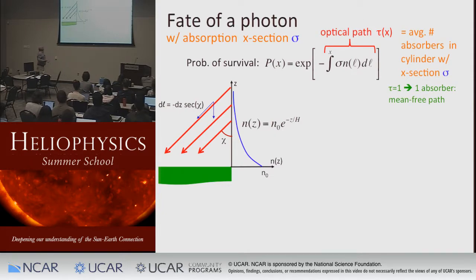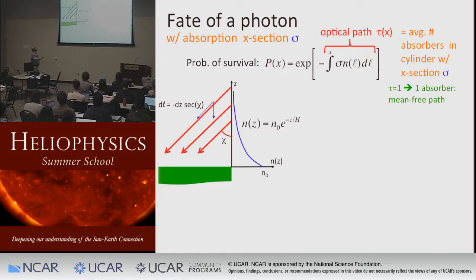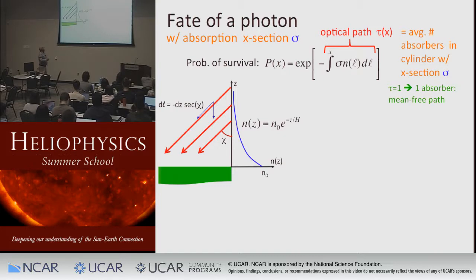I want to think about an individual photon. It has some wavelength, it's coming in — maybe not from straight overhead because it's not noon on the equator — so it's coming in at some angle, written as the Greek letter chi. It comes in at this angle and may get absorbed. We express the absorption in terms of a cross section, which has units of centimeters squared. That is basically — if you think of a cylinder with that cross-sectional area.